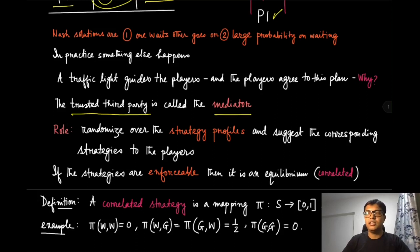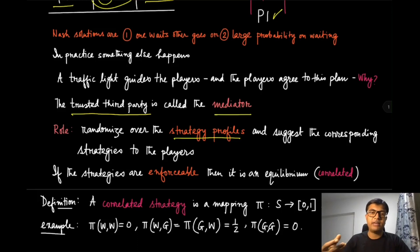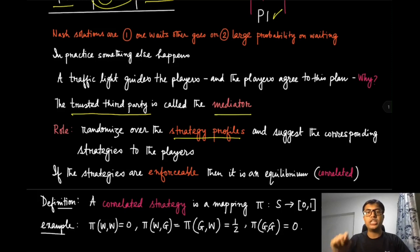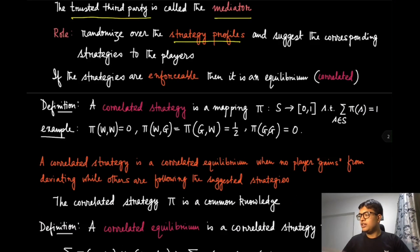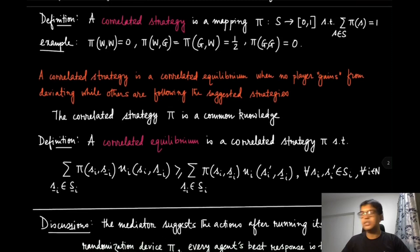In the setup of correlated equilibrium, we assume there exists a trusted third party like traffic police or a traffic light, which we call a mediator. It's not that the players are coordinating with each other directly; they are coordinating using a mediator. The role of the mediator is to randomize over the strategy profiles. Earlier, each player randomized over their individual strategies, but this mediator randomizes over the whole strategy profile. It randomly picks one strategy profile and suggests those individual strategies to each player.